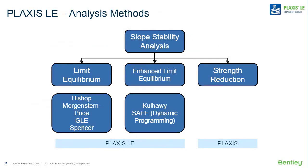There are three methods of slope stability analysis in common use. On one side are the classic limit equilibrium methods — Bishop, Morgenstern-Price, GLE, Spencer. On the finite element side is the strength reduction technique, a newer method gaining popularity. In between is Enhanced Limit Equilibrium, called the hallway method, which pulls in a finite element stress analysis and uses it as the basis for limit equilibrium calculations — a hybrid between the two methods. Today we focus primarily on the limit equilibrium side.